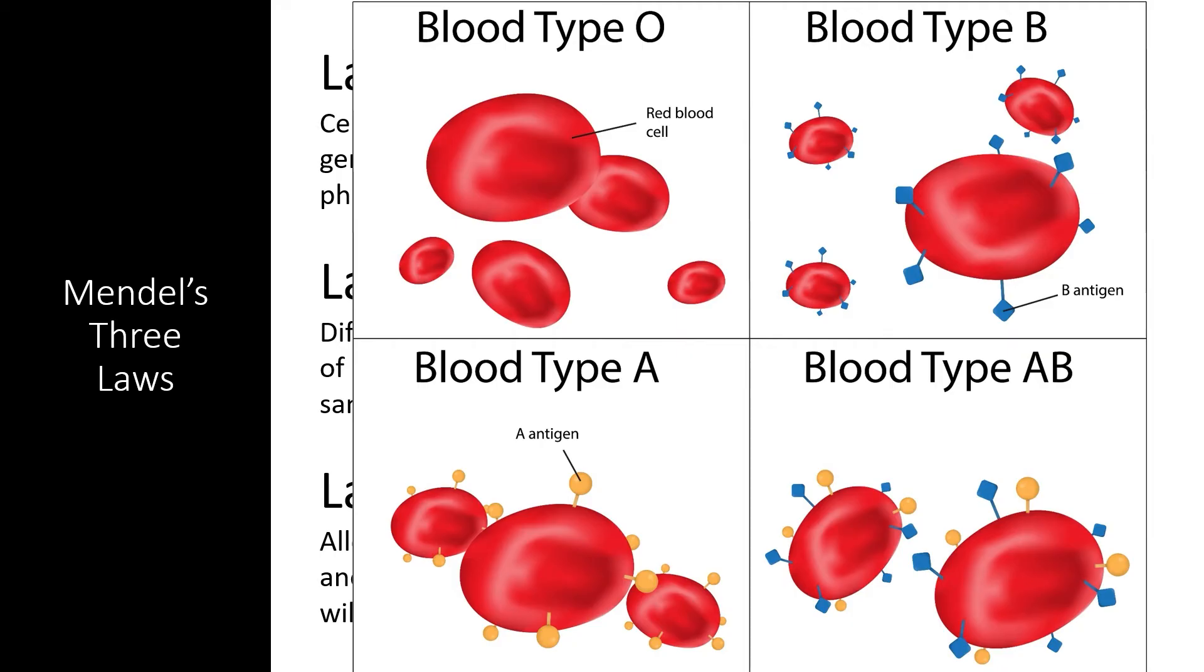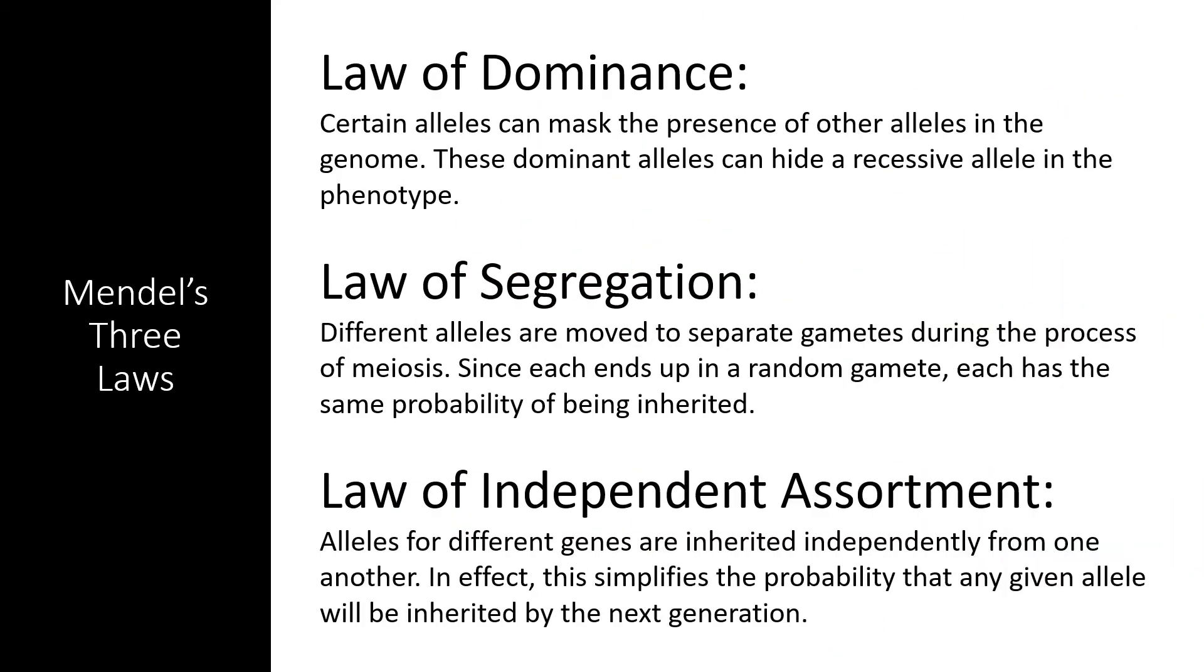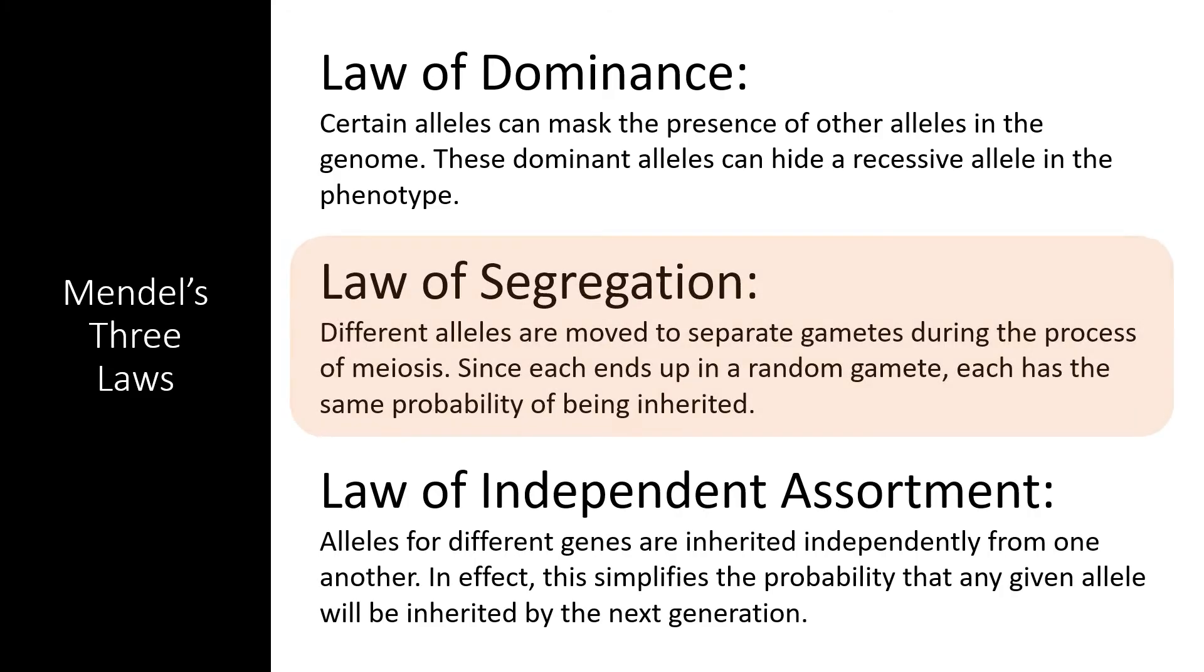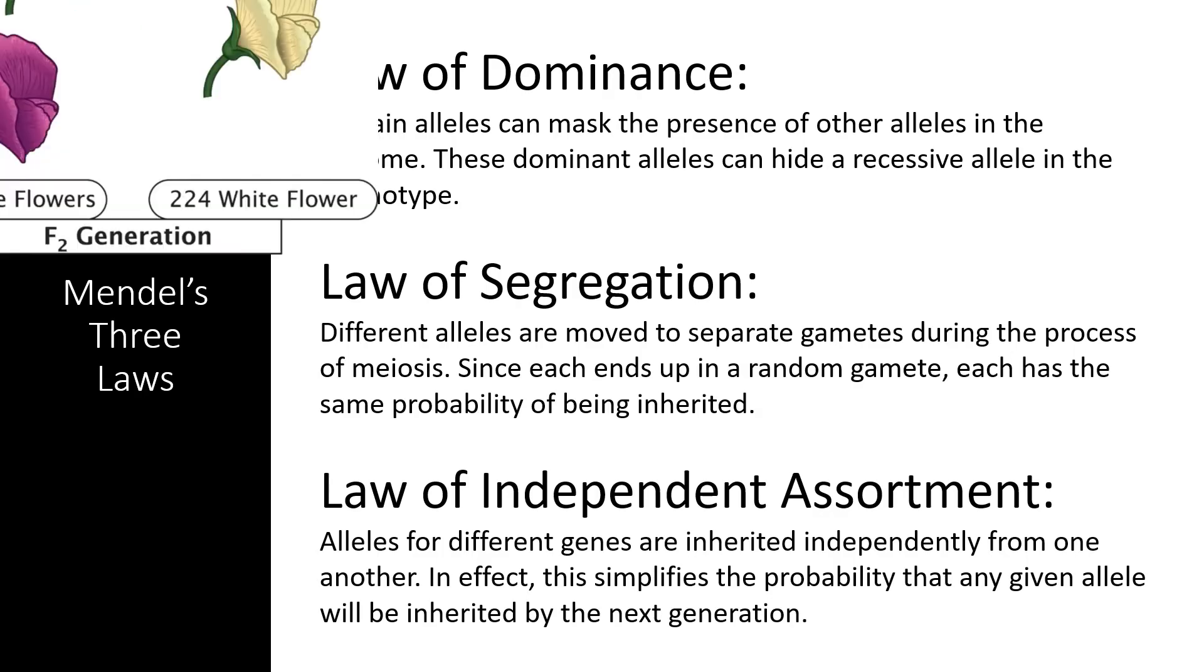But what about Mendel's second and third laws? The Law of Segregation states that different alleles are separated into different gametes, allowing for dominant and recessive alleles to be inherited separately. The Law of Segregation can also be inferred from Mendel's most famous flower color experiment. Since the F2 generation contained some white flowers but the previous generation didn't, it must be assumed that the alleles for white flowers were hiding in the F1 generation and became separated from the dominant purple flowers before they were inherited.